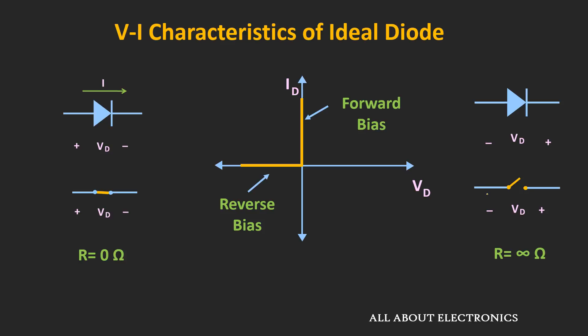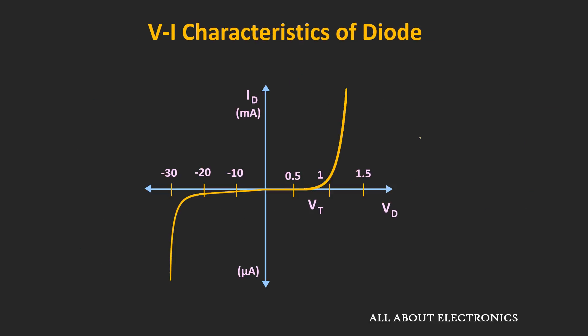In the previous video, we had seen the VI characteristic of the diode. If we consider this diode as an ideal diode, in the forward bias condition it should offer zero resistance, while in the reverse bias condition it should offer infinite resistance. But the actual diode offers some finite resistance in the forward bias condition and very large resistance in the reverse bias condition.